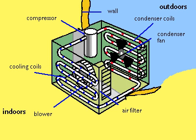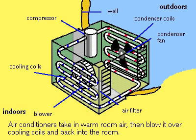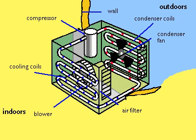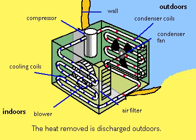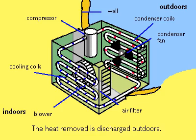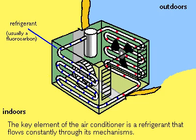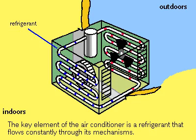Air conditioners are heat exchangers. They take warm air from a room, blow it over cooling coils to remove the heat, and then return it to the room. The heat absorbed by the cooling coils is then blown outdoors. The transfer agent in this exchange is called a refrigerant, which moves between a gas state and a liquid state as it flows through the air conditioner.